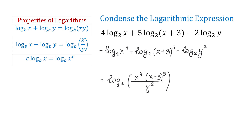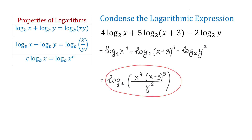One easy method of understanding what expressions will be in the numerator and what will be in the denominator is to look at the sign of each logarithm. If a logarithm has a positive sign in front, then the expression under the logarithm will be in the numerator. But if a logarithm has a negative sign in front, then the expression will be in the denominator.